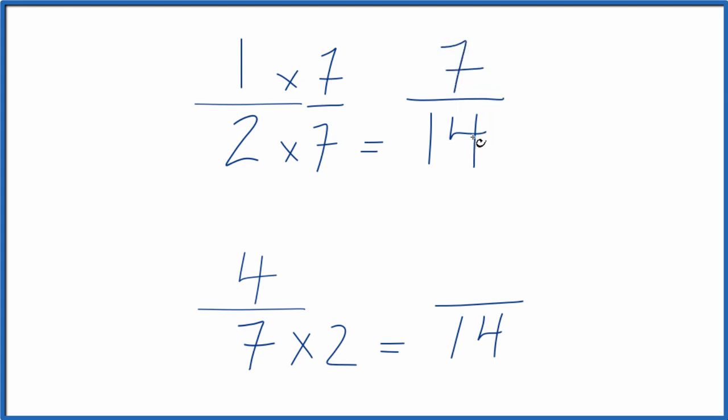And 7 over 14, that has the same decimal value as 1 over 2. They're equivalent, just written differently. Down here, let's multiply the numerator by 2, just like we did the denominator. 4 times 2 is 8.